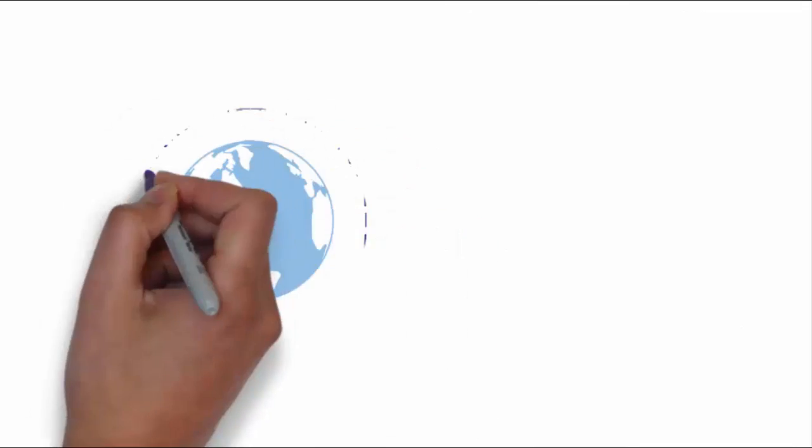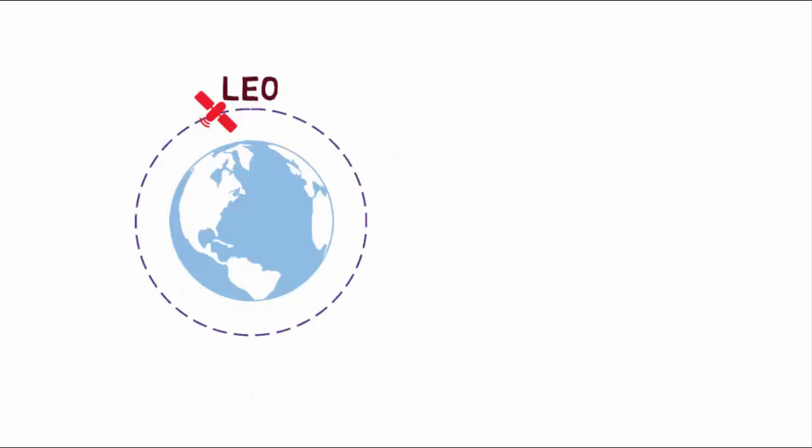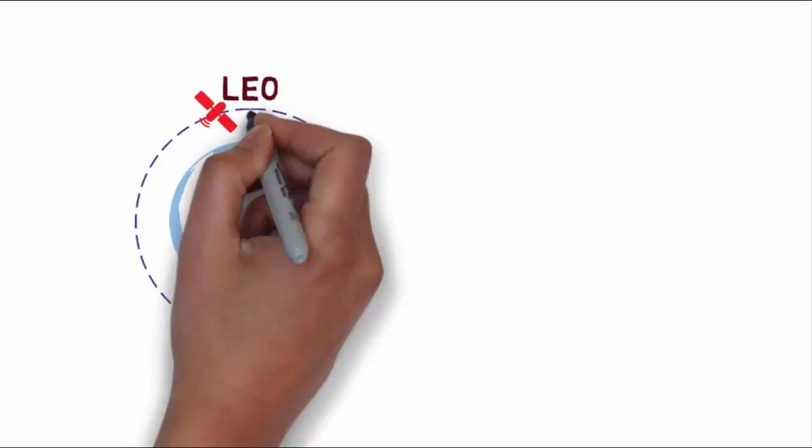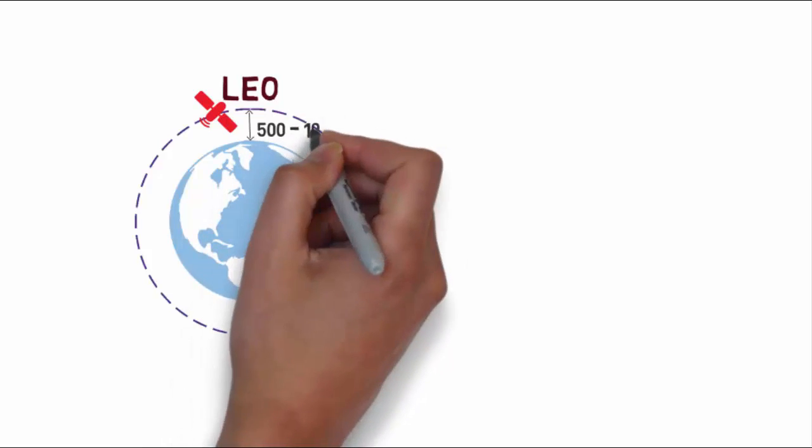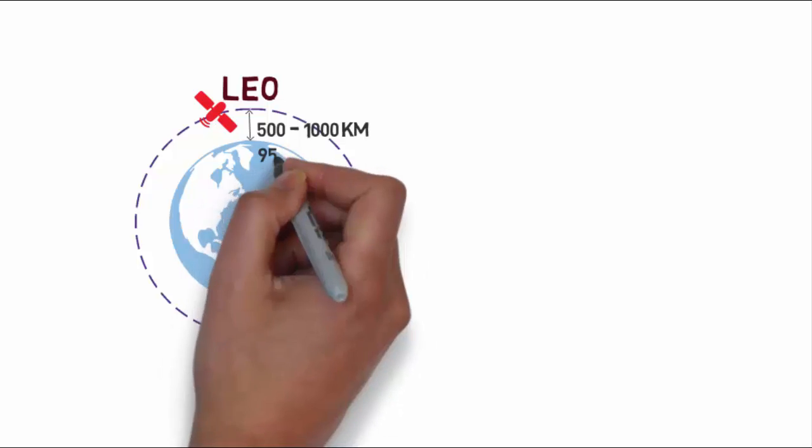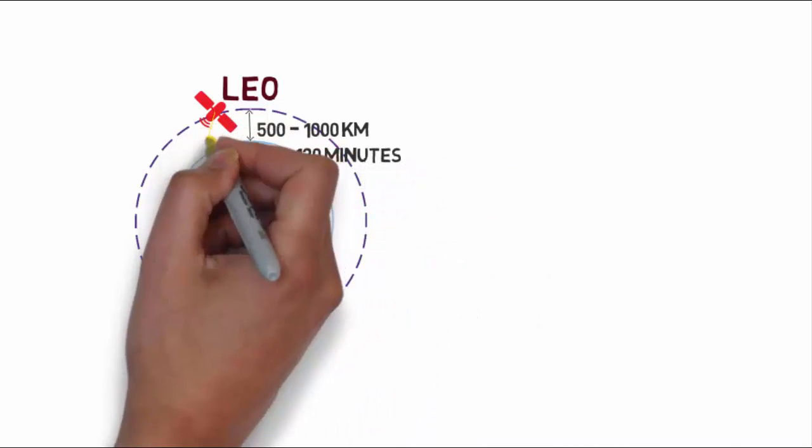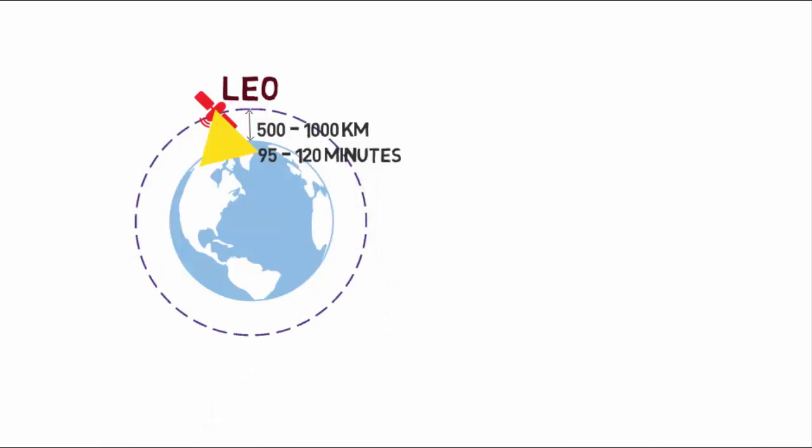The nearest orbit to the earth is called lower earth orbit or in short LEO. LEO satellites are placed 500 km to 1000 km above the surface. Due to the lower orbit, LEO satellites exhibit a much shorter time period of about 95 to 120 minutes. Since it can cover a very small area of earth, a large number of satellites, around 66 satellites, are required to cover the entire earth.